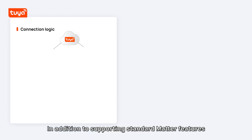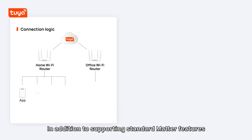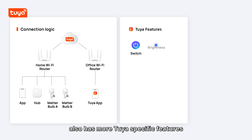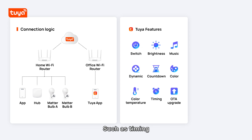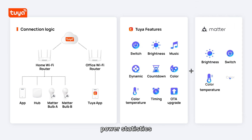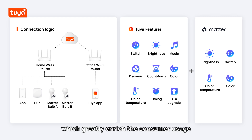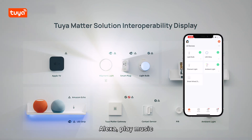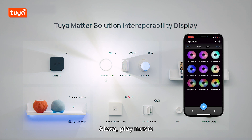In addition to supporting standard Matter features, the Tuya Matter solution also has more Tuya-specific features, such as timing, power statistics, and music rhythm, which greatly enrich the consumer experience. Alexa, play music.